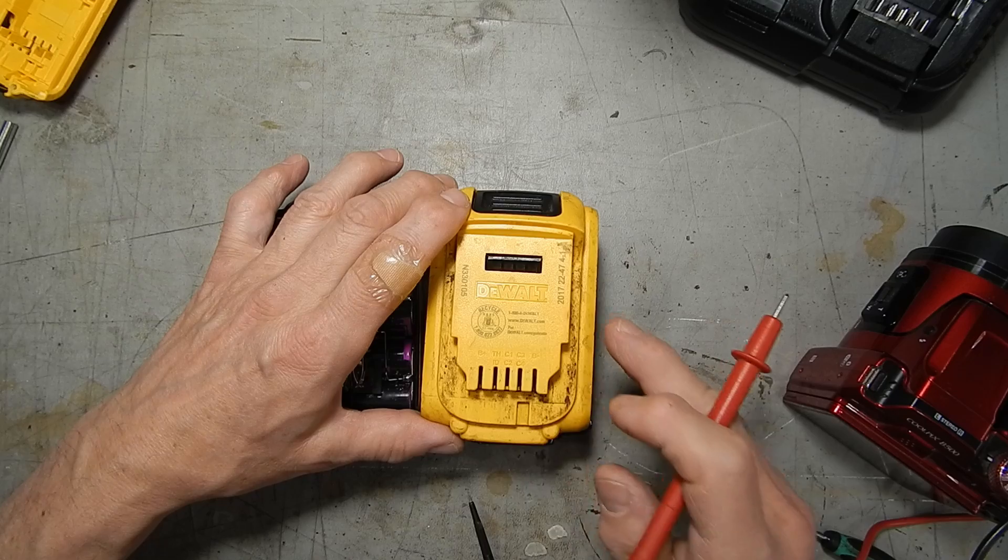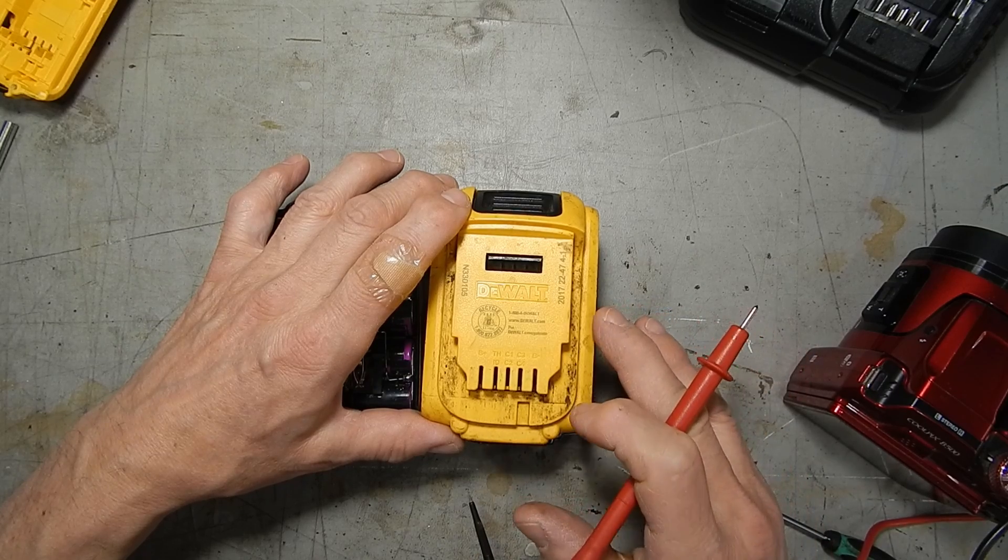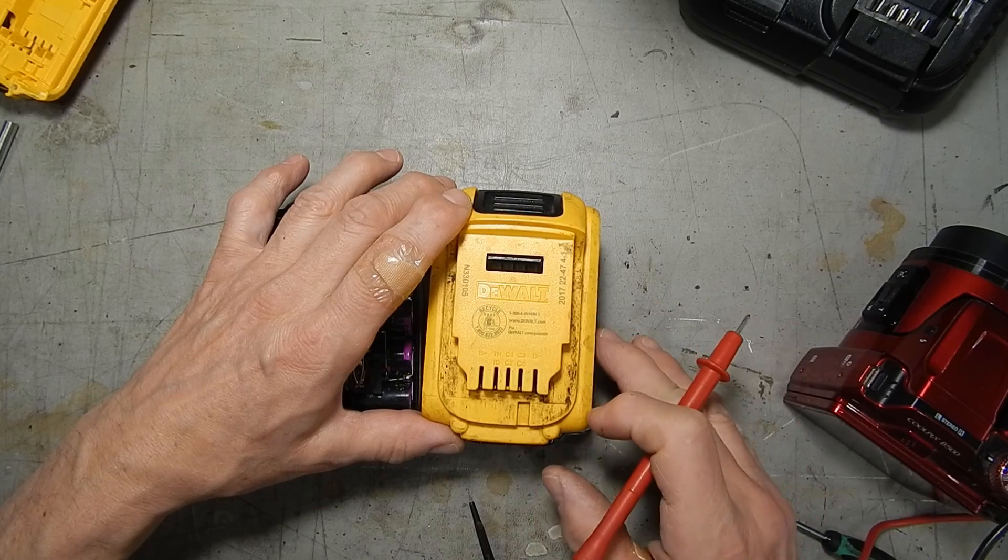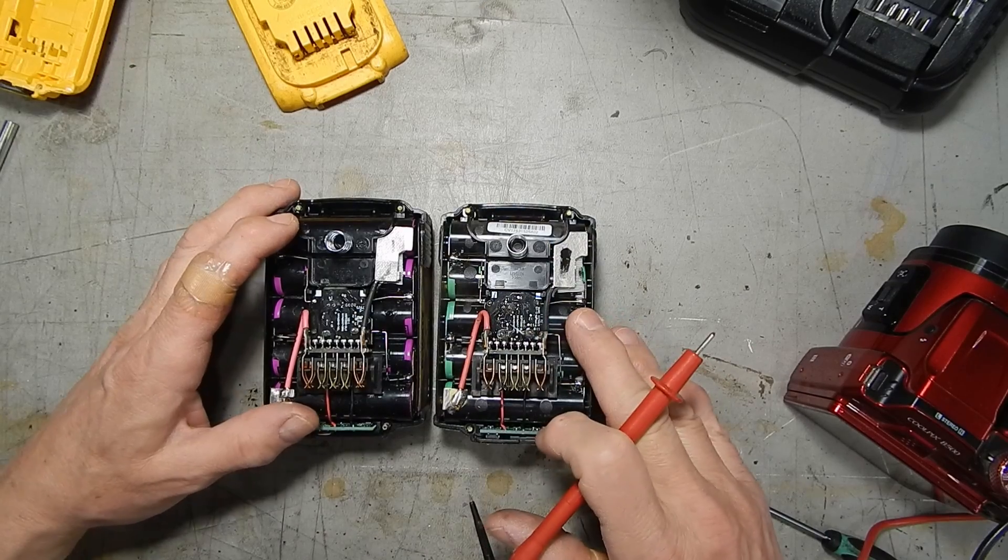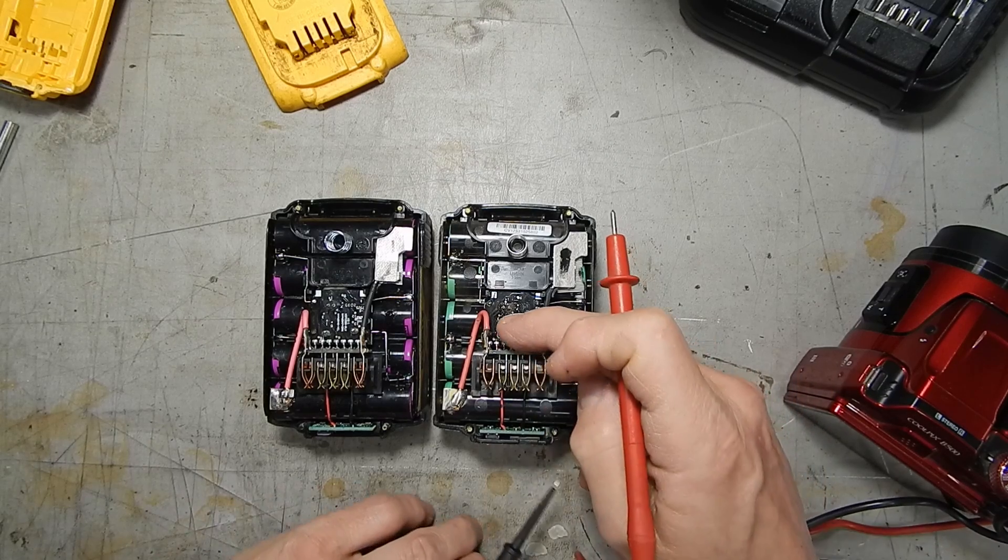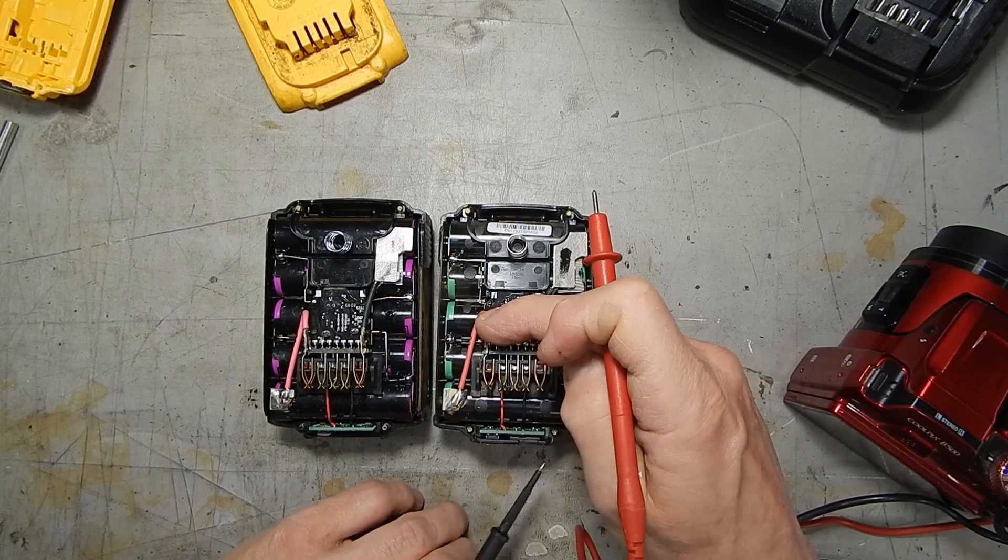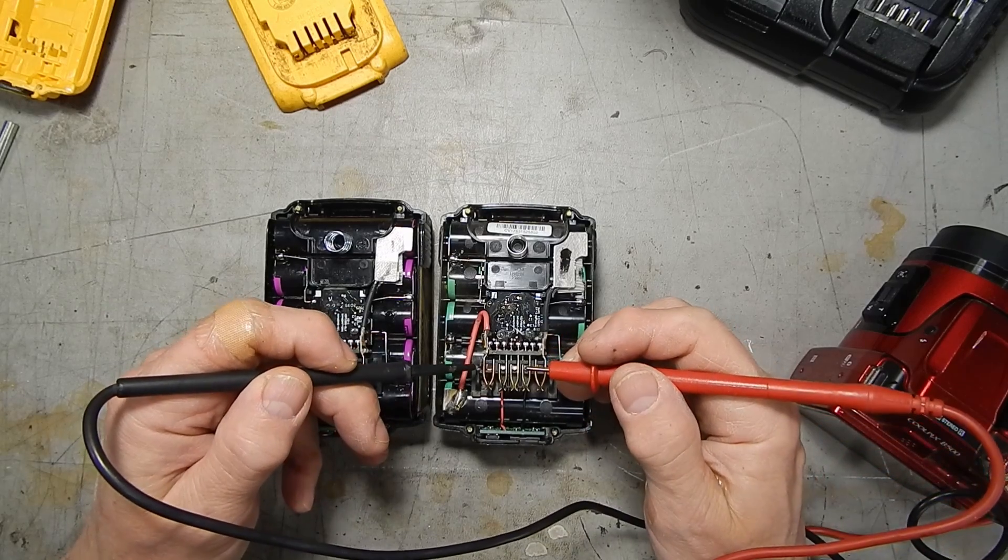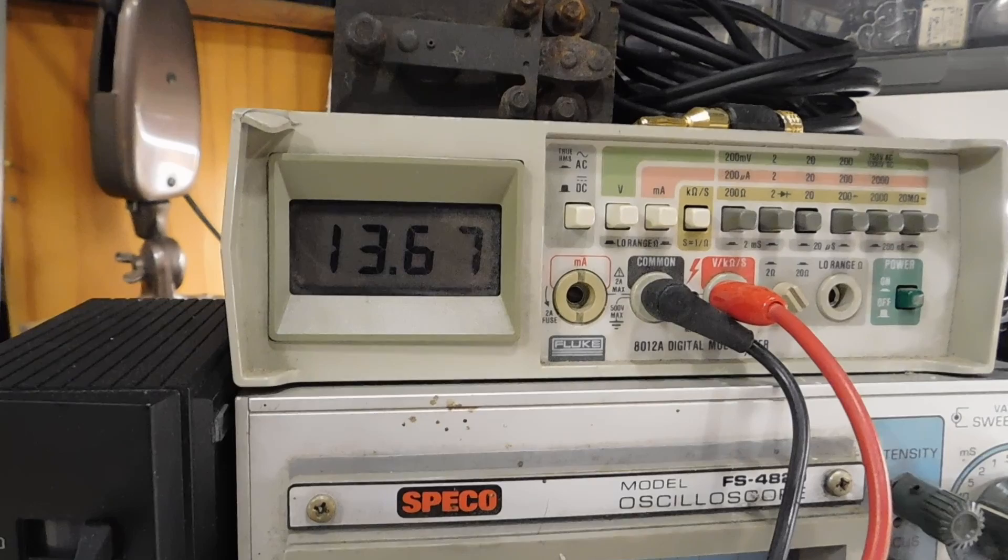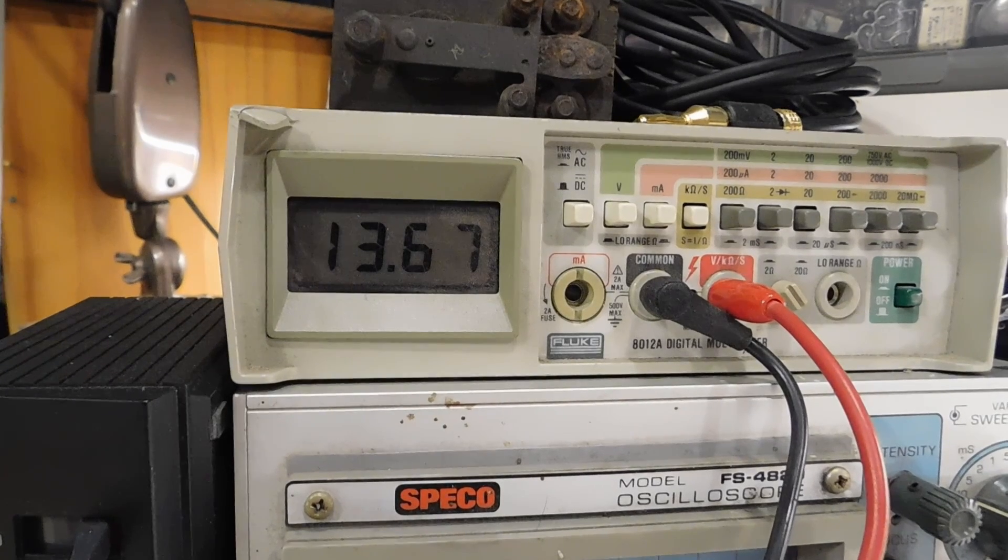This is our good pack and from the research I did that thermistor is apparently connected to the positive terminal, so I should see something like 10k or so here and I do. I'm seeing 13.68k.